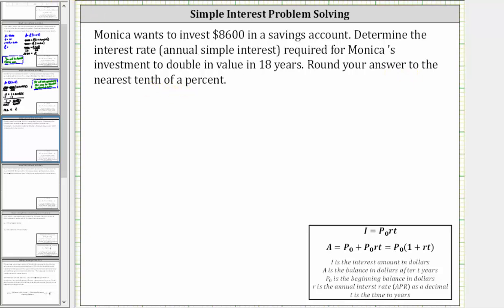To answer the question, we will use the simple interest formula A equals P sub zero times the quantity one plus RT, where A is the account balance after T years, P sub zero is the beginning balance in dollars, R is the annual simple interest rate as a decimal, and T is time in years.